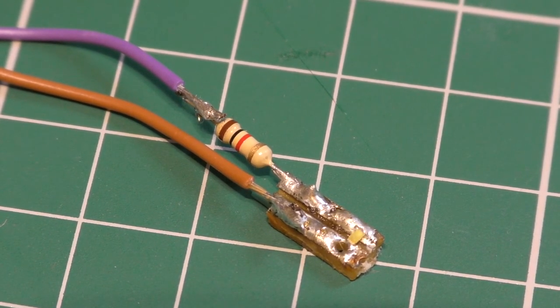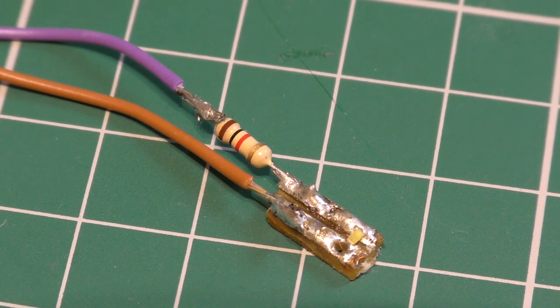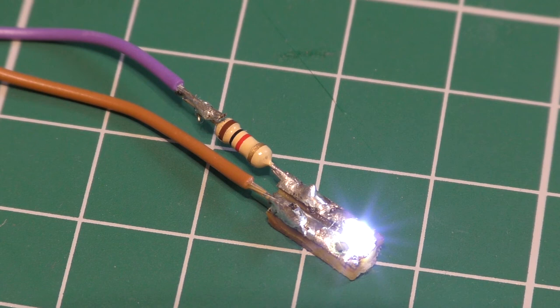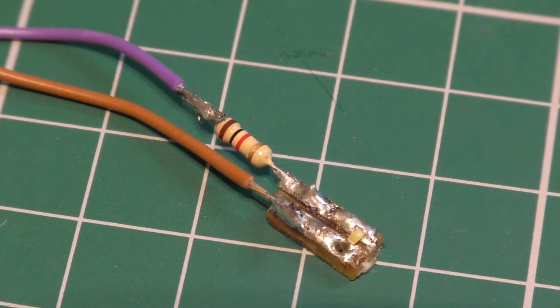As previously said brown is positive, purple is negative. As you can see it's actually quite bright light. Again the resistor is feeding it. I'm a bit sorry about the flashing, I'm just trying to make a quick contact to show you what's happening. But it's a really bright LED.